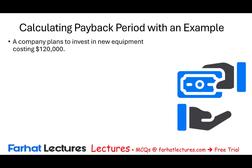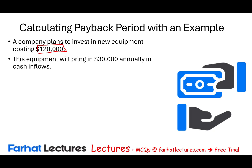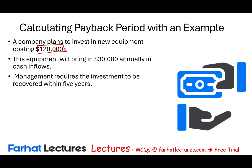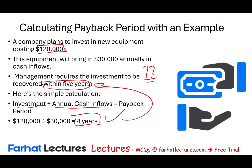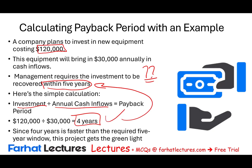Let's assume a company wants to invest in new equipment costing $120,000. The equipment will bring $30,000 annually in cash inflows. Management wants to recoup their money within five years. Would this project be acceptable? Simple calculation: $120,000 divided by $30,000 annual cash inflows equals four years. Since four years is within five years, they will accept the project — this capital project is a go-ahead.